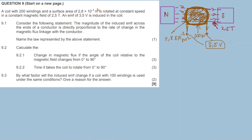We get an EMF of 3.5 volts. Question 9.1: name the law represented by the following statement — 'the magnitude of the induced EMF across the ends of a conductor is directly proportional to the rate of change of the magnetic flux linkage with the conductor.' That is Faraday's law of electromagnetic induction.